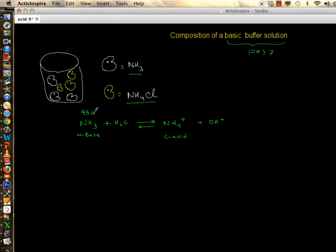But this is the problem: if you only have 95 percent of weak base, you have quite sufficient base to react and neutralize any added acid. But if you only have, let's say, five percent of conjugate acid, you do not have enough.